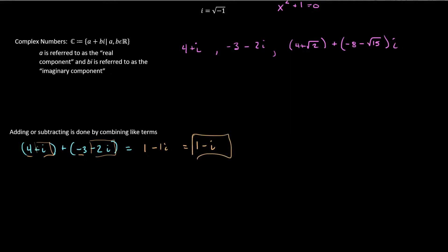If you wanted to subtract them, let me reverse the order on these. Negative 3 minus 2i, and then subtract 4 plus i equals. Now this negative sign has to get distributed through. So this is negative 3 minus 4 for negative 7, negative 2 minus 1 for negative 3i. Easy peasy lemon squeezy.